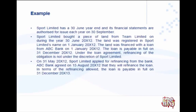Under the loan agreement, refinancing of the obligation is not under the discretion of Sport Limited. Which paragraph does this trigger? On 31 May, Sport Limited applied for refinancing, but ABC Bank only agreed on 15 August 2012. So 30 June is our year end, 30 September is authorized for issue, and only on 15 August did ABC Bank agree to refinance the loan.